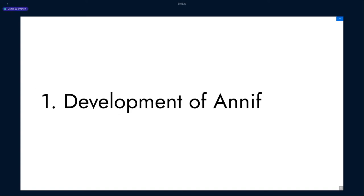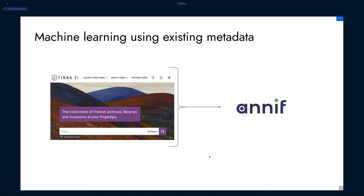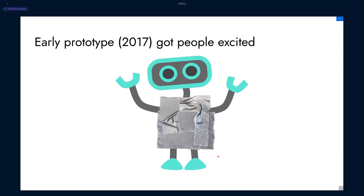We know that manual indexing of documents is a very labor-intensive process, and it would help to have a tool that would assist us in doing this. Annif started from asking the question: what if we could use existing metadata — for example, from the Discovery Service Finna, that aggregates metadata from libraries, archives and museums in Finland — and reuse this metadata to help create more and better quality metadata for search and discovery. The first prototype based on this idea was created in 2017. The technical implementation was very crude, but it got people excited, so we decided to start doing something in this area.